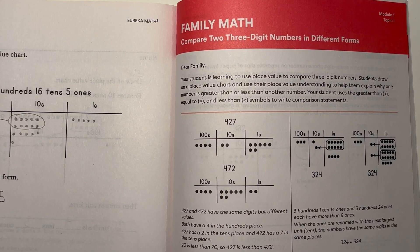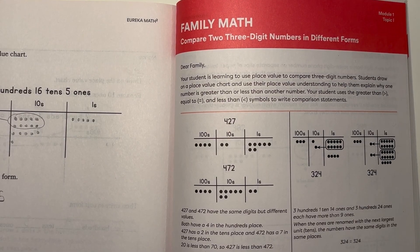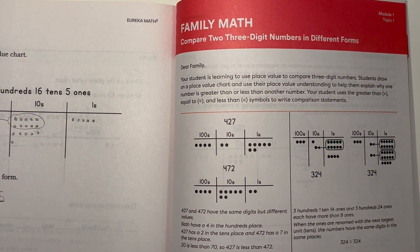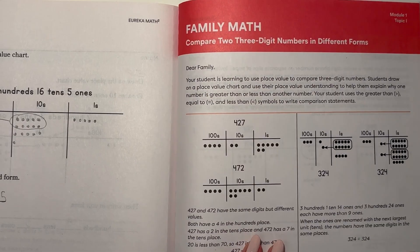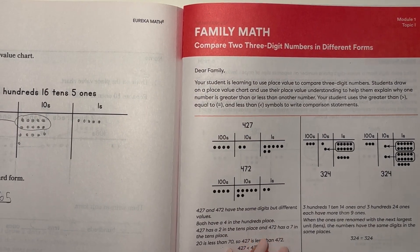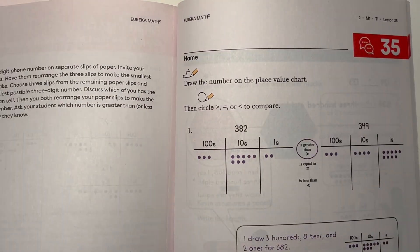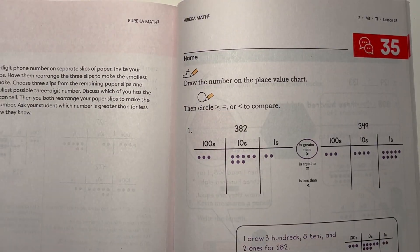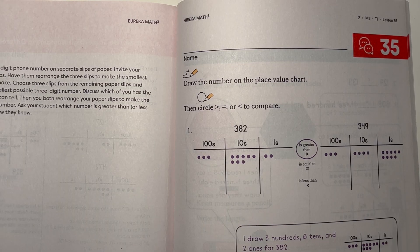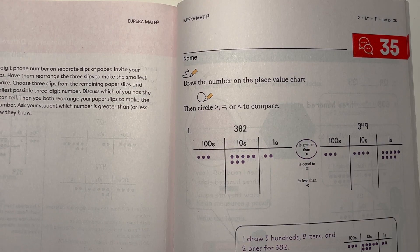Hey guys, today I'm doing Eureka Math Squared Grade 2, Module 1, Topic I. Let's get started. Lesson 35: draw the number on the place value chart, then use greater than, less than, or equal to to compare.